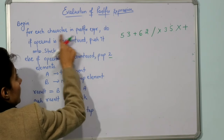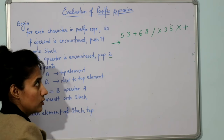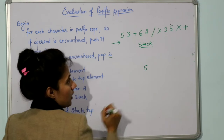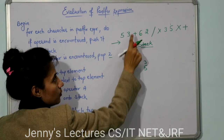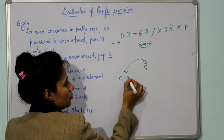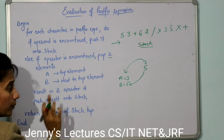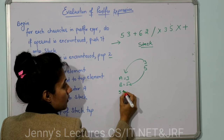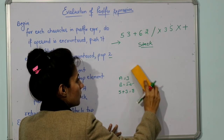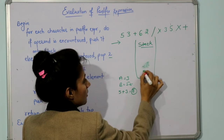We will scan this postfix expression from left to right. 5 is operand — push it. 3 is also operand — push it. Next is plus — operator — so pop 2 elements: A = 3, B = 5. Result is B + A = 5 + 3 = 8. Push 8 back onto the stack. Now the stack has only 8.